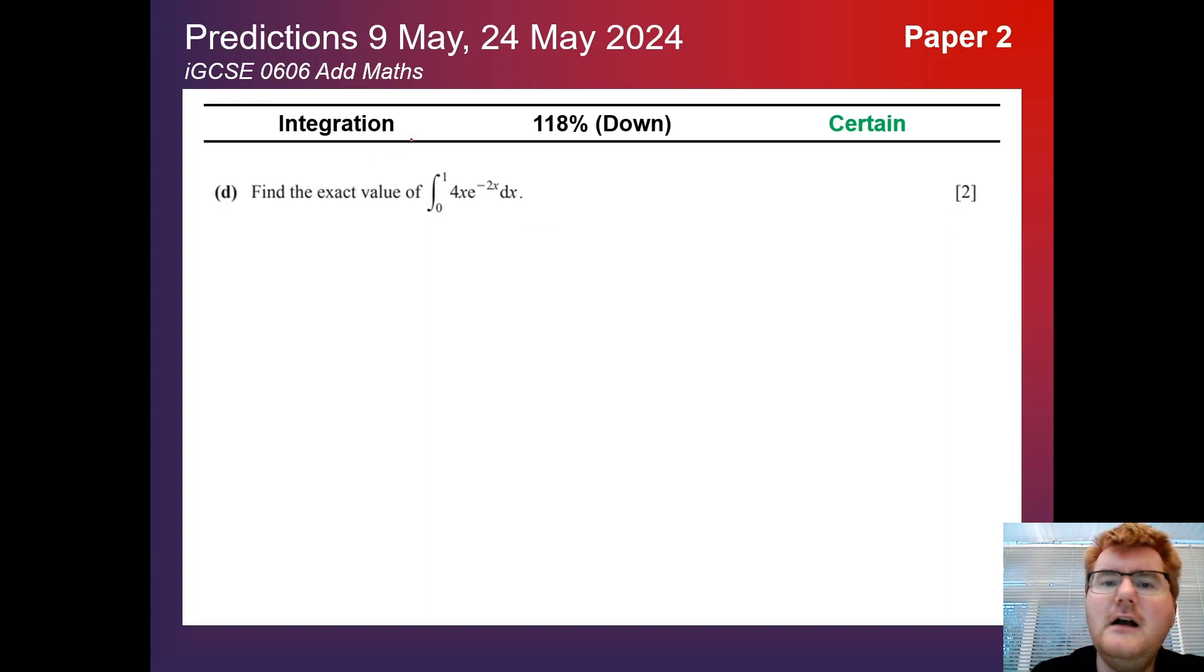Integration, however, is at 118%, so it's slightly down, but obviously still in the certain category. Can be an easier style question. This is the last part actually of a differentiation question, which is quite typical. Using what you've done so far then to work out this particular exact value.